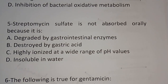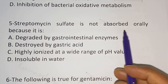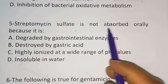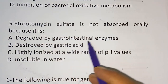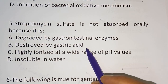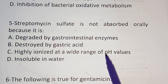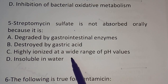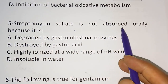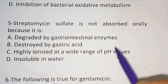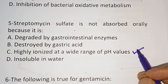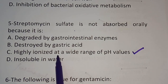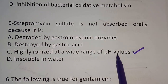Question 5: Streptomycin sulfate is not absorbed orally because — Option A: it is degraded by gastrointestinal enzymes; Option B: it is destroyed by gastric acid; Option C: it is highly ionized at a wide range of pH values; Option D: it is an inhibiting water. The correct answer is Option C — Streptomycin sulfate is not absorbed orally because it is highly ionized at a wide range of pH values.